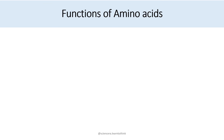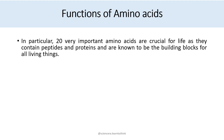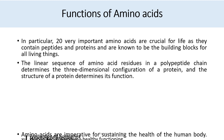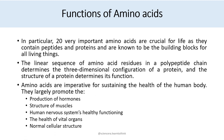The functions of amino acids: the 20 important amino acids are crucial for life as they form peptides and proteins and are known as the building blocks of all living things. The linear sequence of amino acid residues in a polypeptide chain determines the three-dimensional configuration of a protein, and the structure of a protein determines its function. Amino acids are imperative for sustaining the health of the human body — they largely promote the production of hormones, structure of muscles, human nervous system healthy functioning, health of vital organs, and normal cellular structure.